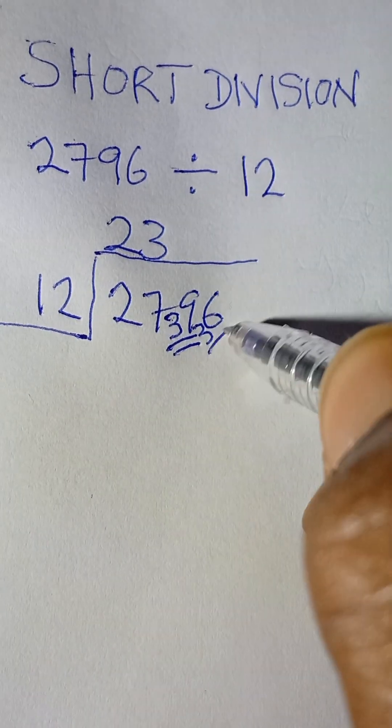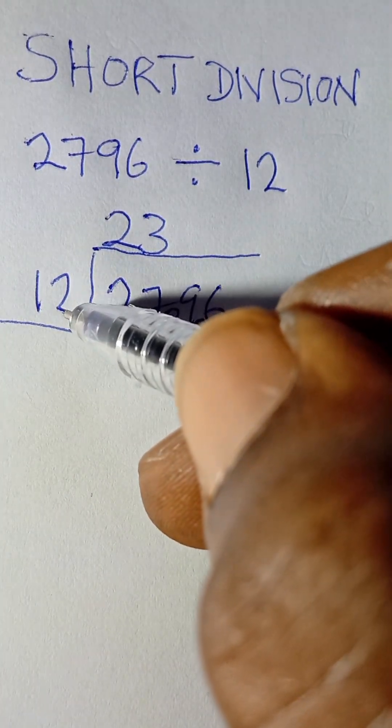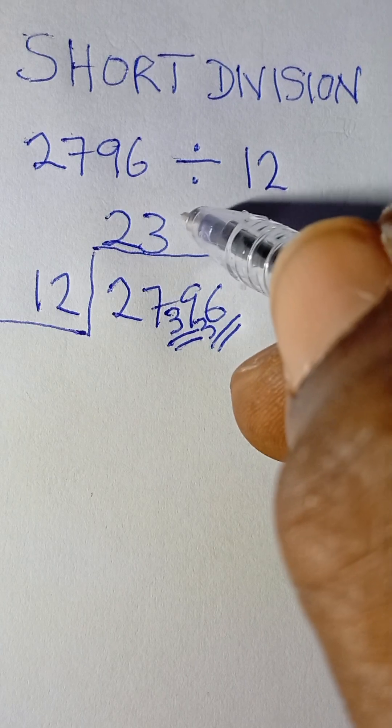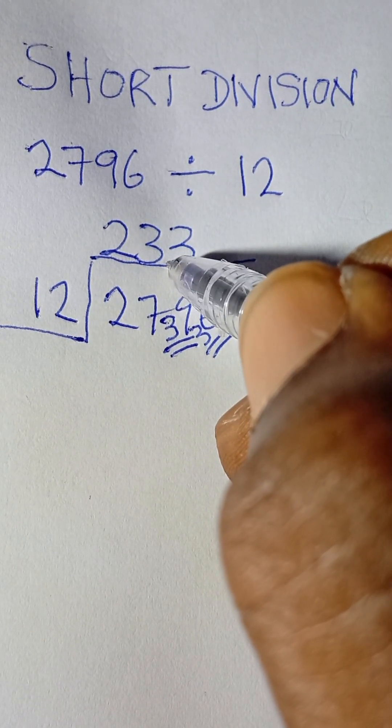So we now have 36. We say 36 divided by 12, and that will give us 3 times again. And this time there's no more remainder, so that gives us our final answer at the top of the bar here.